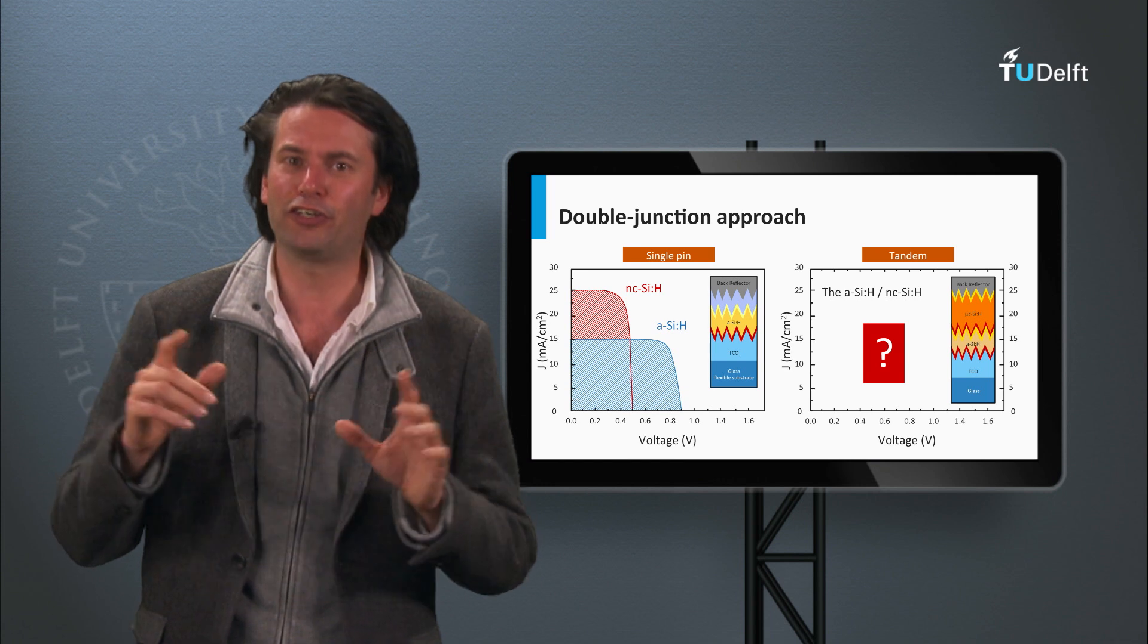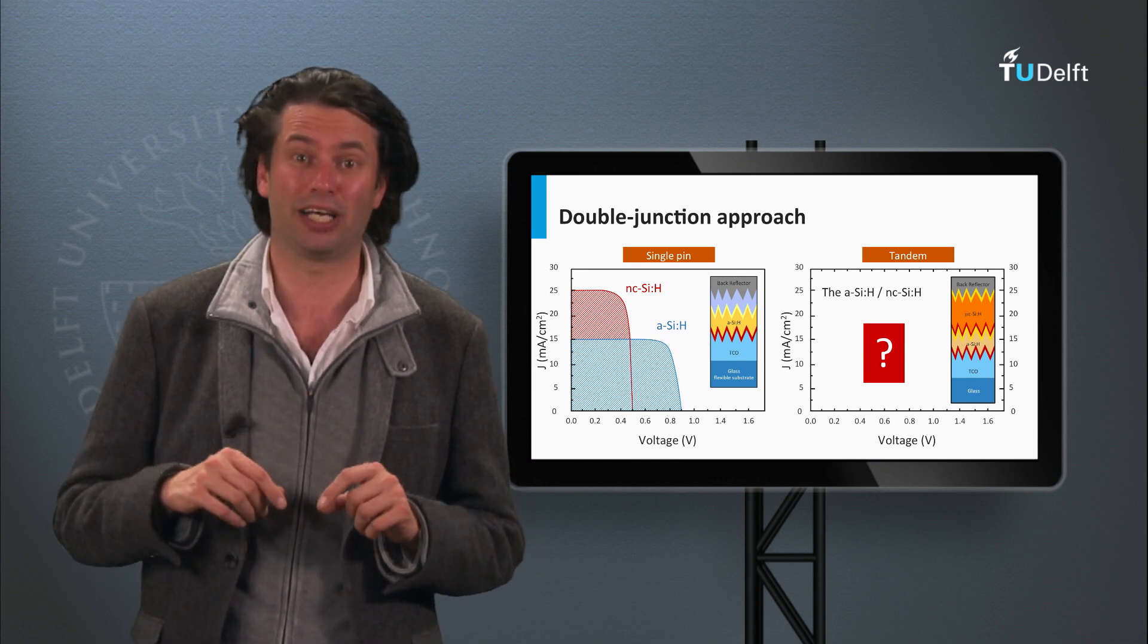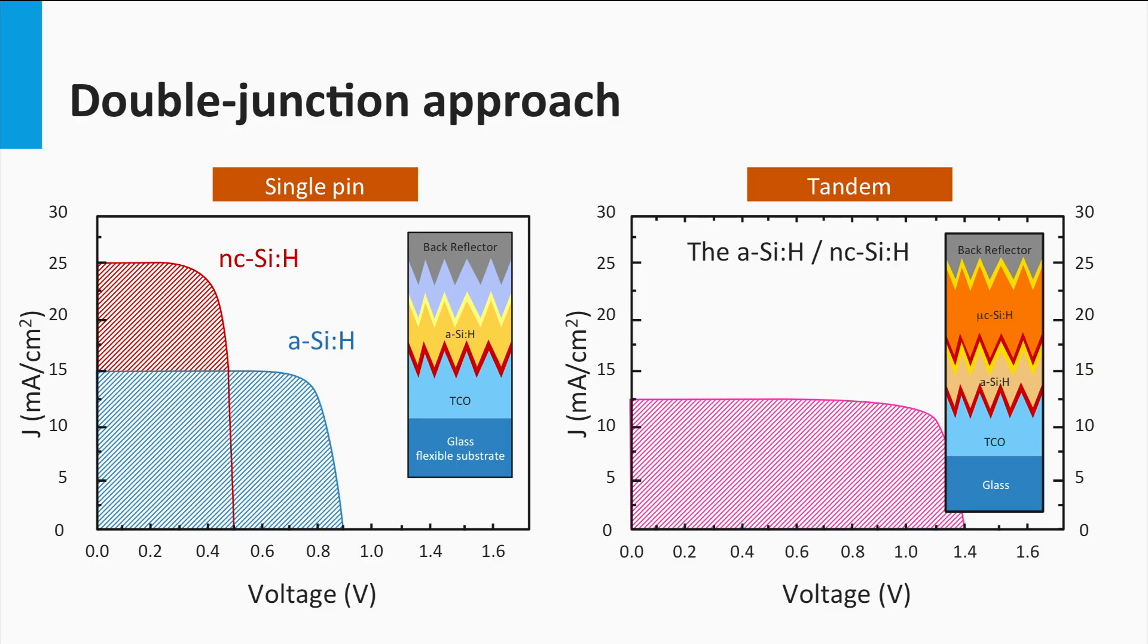How would the JV curve of the corresponding tandem cell look like? If we would make a multijunction of both components, we would get a cell with an open-circuit voltage equal to the sum of the open-circuit voltages of the individual single cells. The resulting current density of the double junction is lower than the currents in both bottom cells. The total current utilization of the tandem cell is determined by the bottom cell, which is 25 mA per square centimeter.